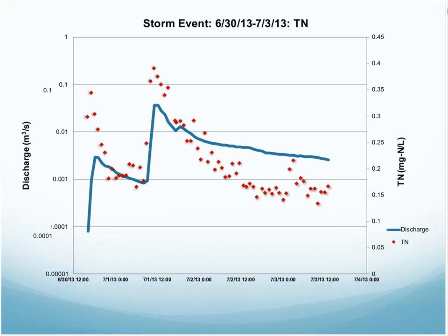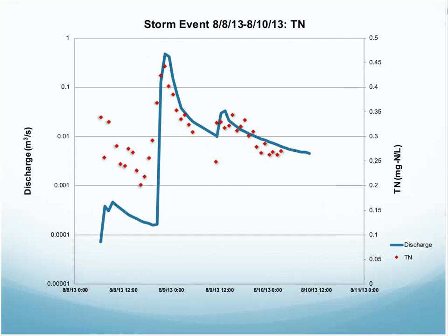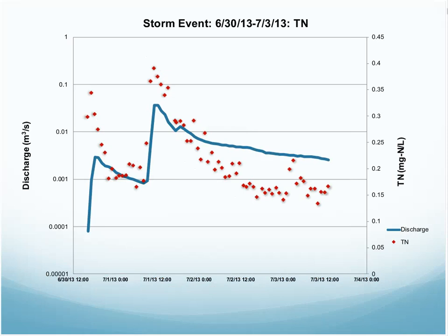The second is total nitrogen, which for the July 1st storm and the August 8th storm, we see that total nitrogen also — similar to DOC — flushes consistent with the stream discharge.